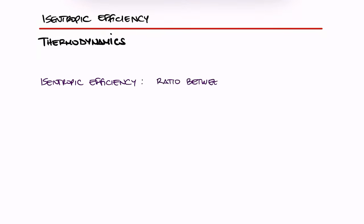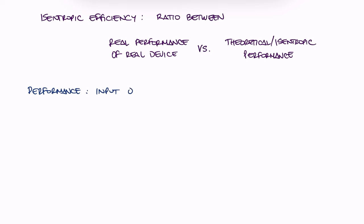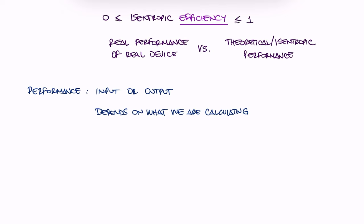Isentropic efficiency is defined as the real performance of a real device relative to the theoretical isentropic performance. The performance can be the input or output depending on what we are calculating, and since we call it efficiency, it means that we are going to be calculating a number between zero and one.